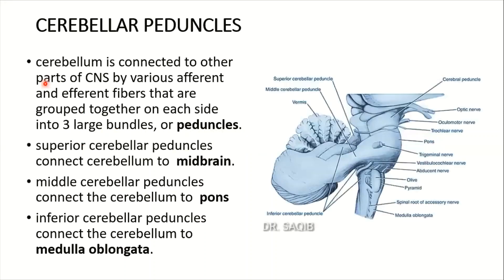Welcome to Learning Anatomy. Today I will talk about the connections of the cerebellum. The cerebellum is connected to other parts of the CNS by various afferent and efferent fibers that are grouped together on each side into three large bundles or peduncles.